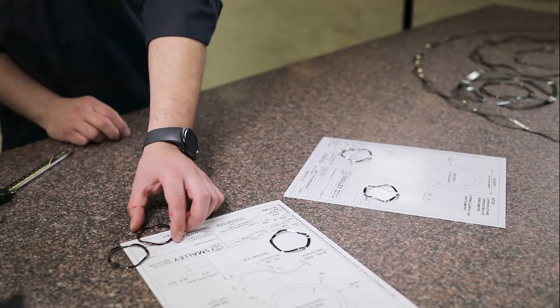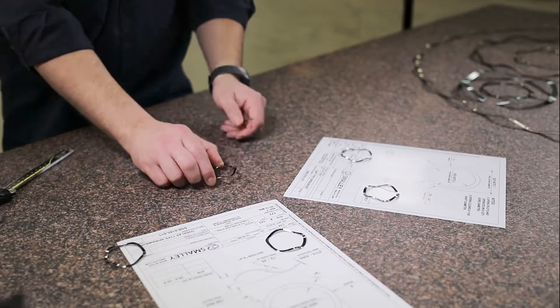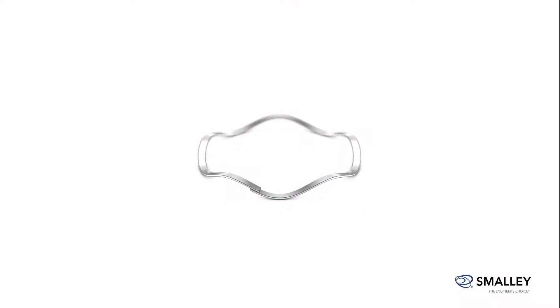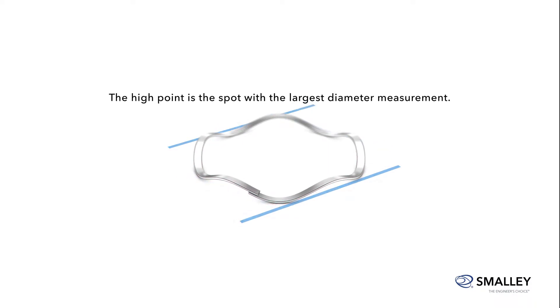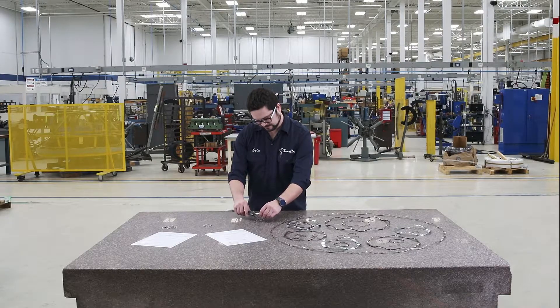To begin the process, lay the spring on the flat surface. Before you can take your measurement, you need to find the spring high point or the spot with the largest diameter. To do this, move the calipers around the diameter of the spring.